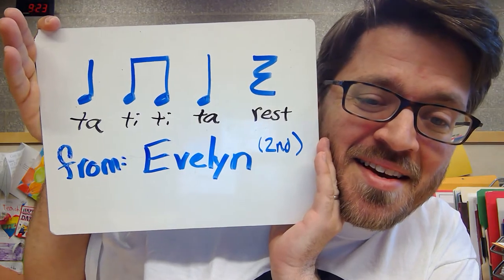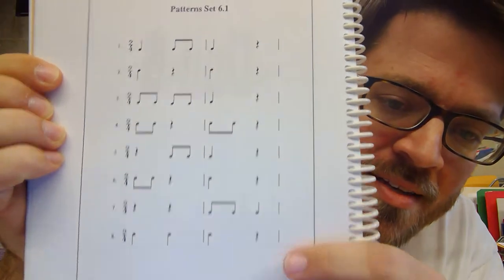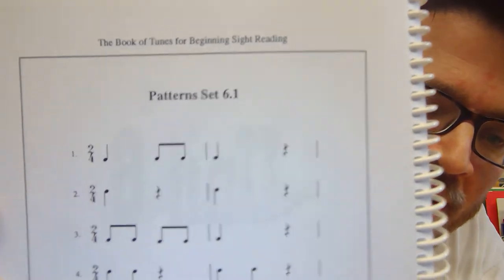The old classic. Ta, ti-ti, ta, rest. Let's practice some more together. Here's some more that are written down. Maybe you can see that on your screen. Maybe we'll make it nice and big. Okay, this one should look familiar.